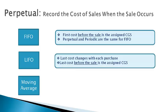Under LIFO, the cost of the item sold is the cost of the last purchase just before the sale. The last cost changes with each new purchase.